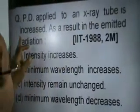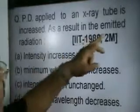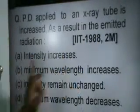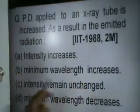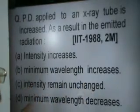The next question is: potential difference applied to an X-ray tube is increased as a result in the emitted radiation. Options: (a) intensity increases, (b) minimum wavelength increases, (c) intensity remains unchanged, (d) minimum wavelength decreases. This has been asked in IIT 98 for two marks.